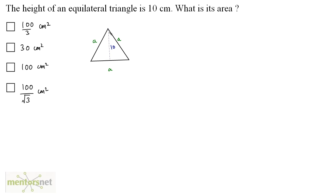In an equilateral triangle, the altitude divides the base into two halves. So this becomes A/2 and A/2. This forms a right angle triangle, and we can calculate A by the Pythagorean theorem.